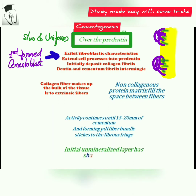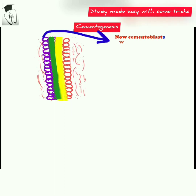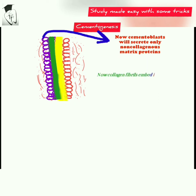This activity continues until 15 to 20 micrometers of cementum is formed, and forming PDL fiber bundles attach to the fibrous fringe. The initial unmineralized layer has Sharpey's fibers as principal fibers of the periodontal ligament to cementum. New cementoblasts, which are clearly defined, secrete only non-collagenous proteins. The collagen fibrils embedded in cementum, called extrinsic fibers, are formed by periodontal ligament fibroblasts, forming the acellular extrinsic fiber cementum.